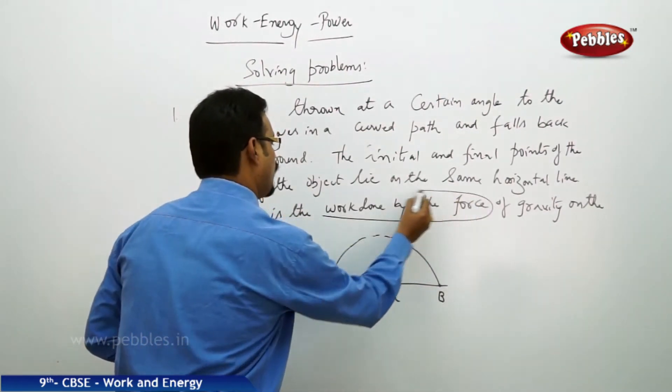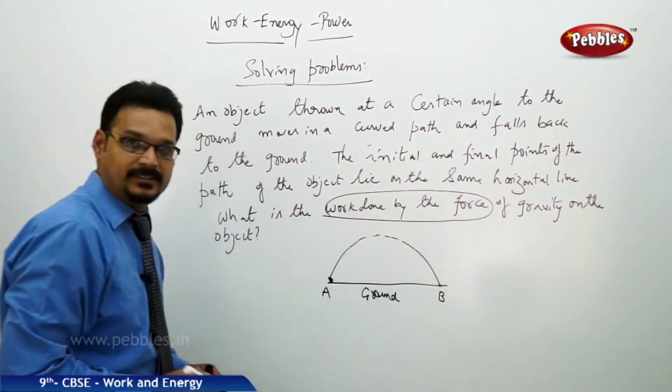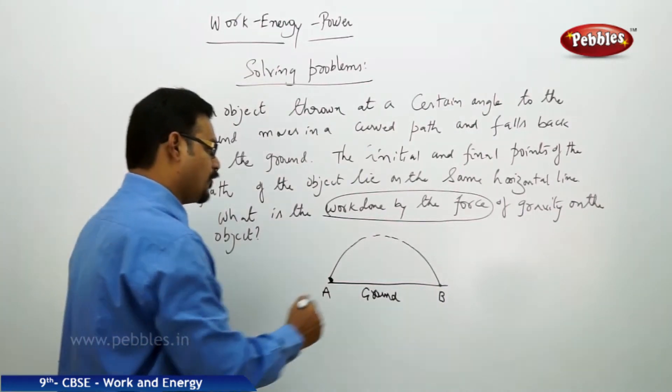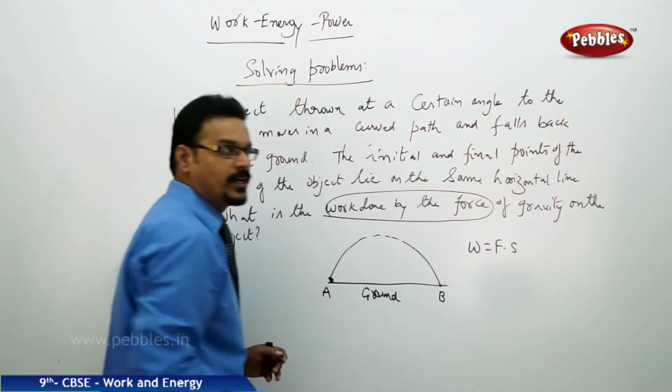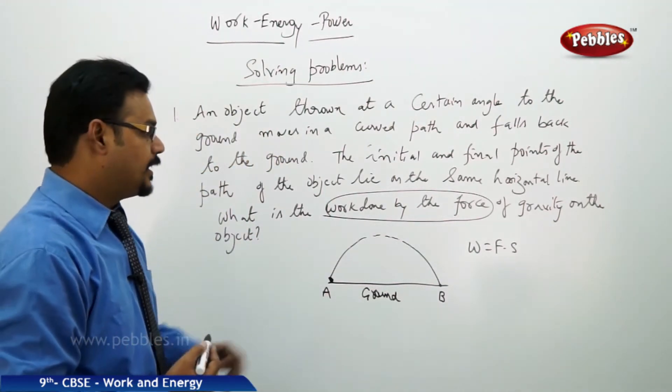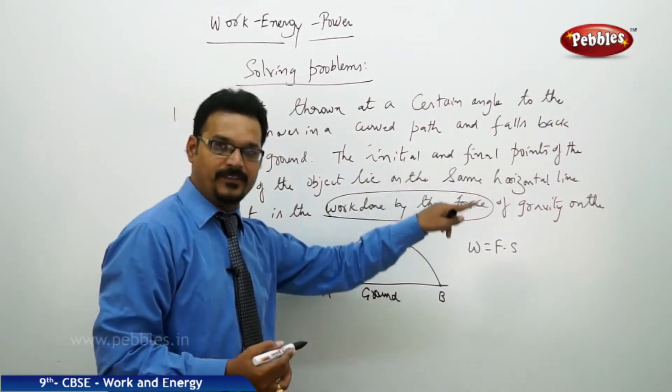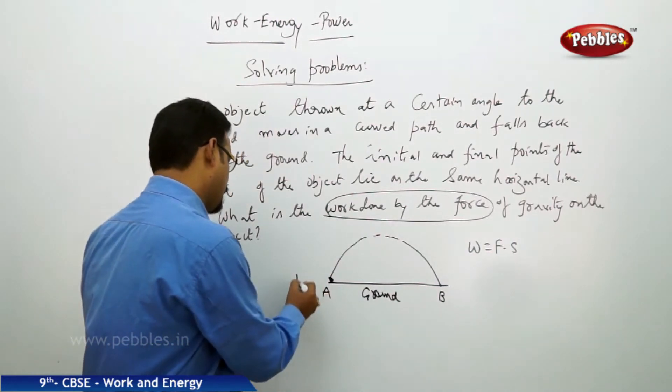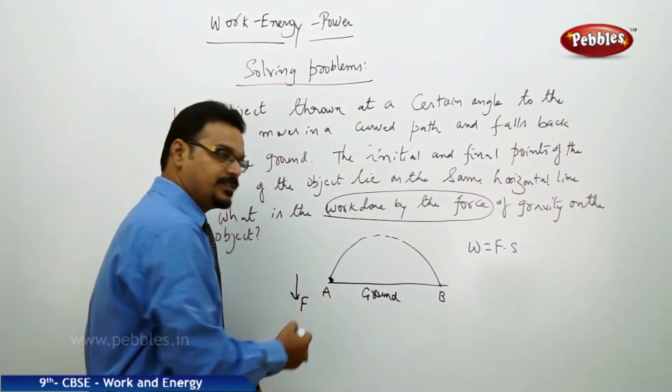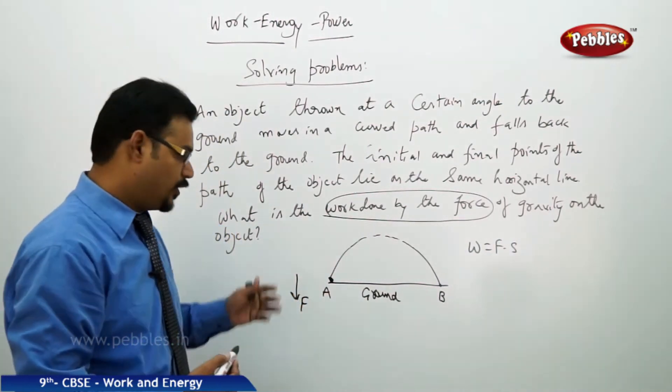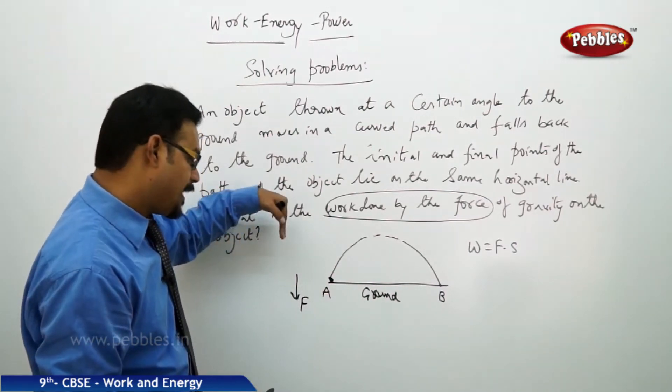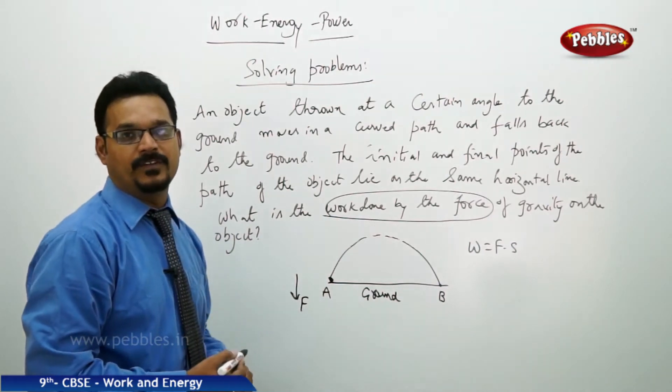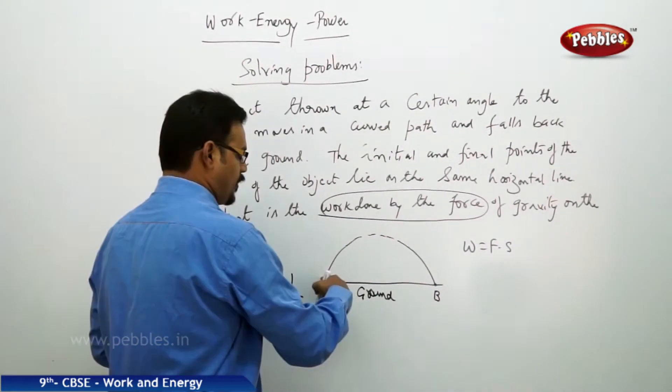Now they're asking what is the work done by the force of gravity. Work done W, the formula is force into displacement as we know. Here the force is the force of gravity, which is actually acting downwards, so we need to see the work done in the direction of the force of gravity.